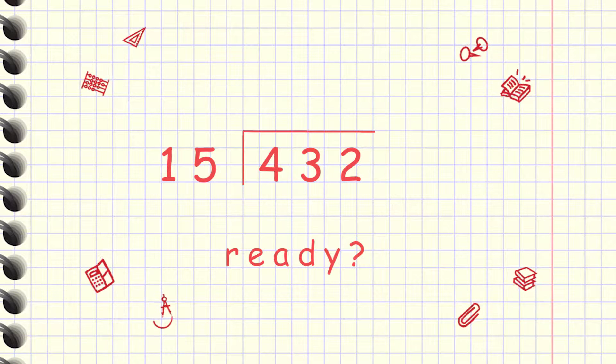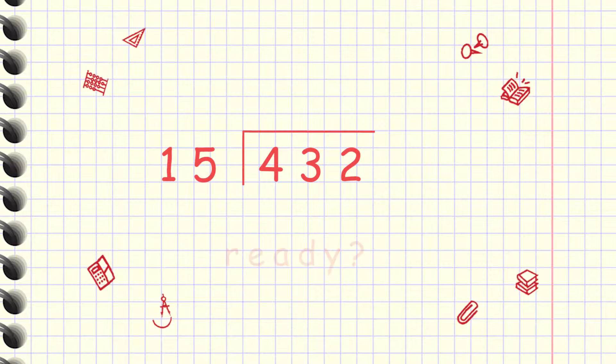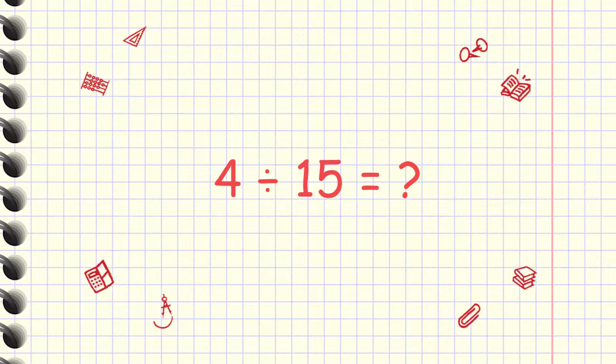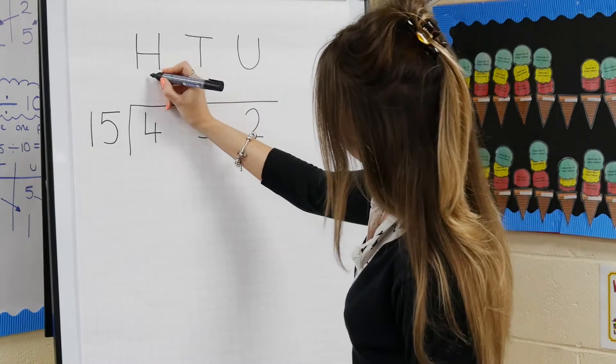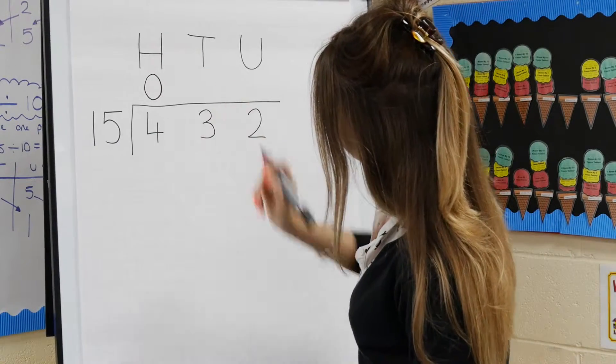Now you are ready to begin the calculation. Start by dividing the 4 in the hundreds column by 15. You can't do 4 divided by 15, so write a zero on the line above the 4 in the hundreds column.